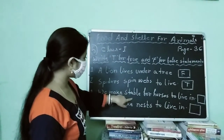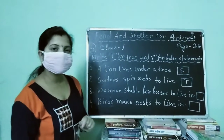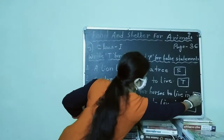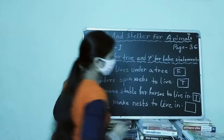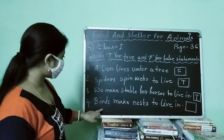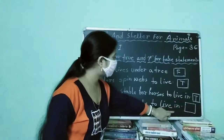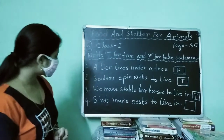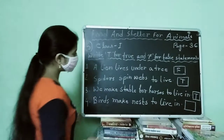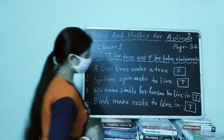Number 3: we make a stable for a horse to live in. This statement is also true, so we will put T in this box. And the last one: birds make a nest to live in. This statement is also true, so we will put T in this box.